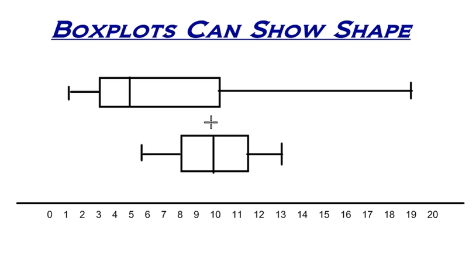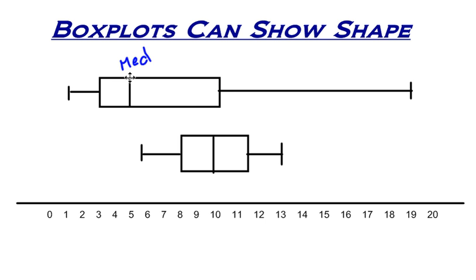If I look at the data set on the top and the box plot displaying that data, I can see that my median is shifted toward one side of my box. I can also see that one whisker is a lot shorter than the other whisker. So if I have a long whisker on one side and a median that is shifted closer to the shorter whisker, then I can say that this is skewed in one direction or the other.